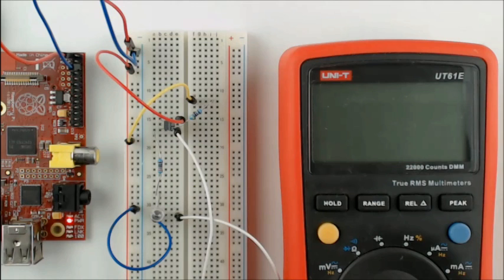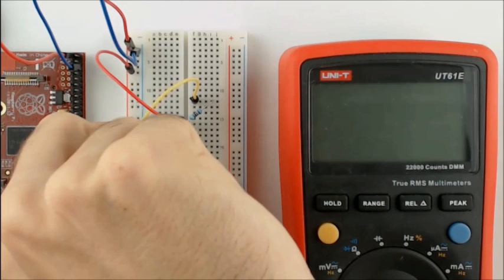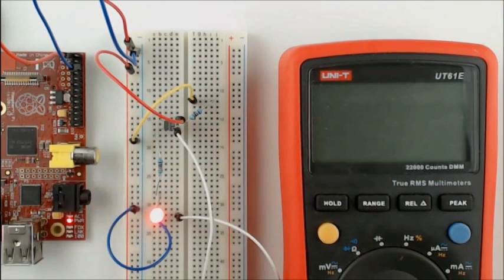In the current setup, the transistor is off as the base is connected to the 3.3 volt rail. But if we instead connect the base to 0 volts, then the transistor turns on. Of course, this would normally be done through code using a GPIO pin, but the idea is the same.